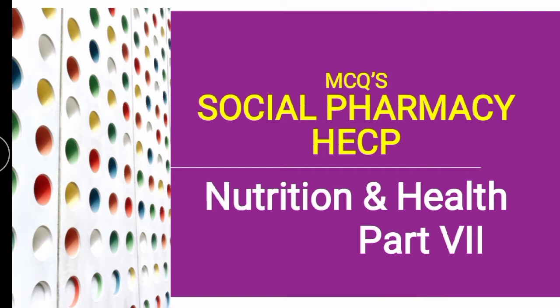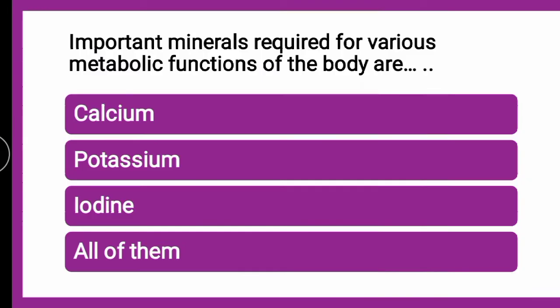To start with Part 7, the very first MCQ is: Important minerals required for various metabolic functions of the body are — dash. You all might be knowing about the minerals which are required in very trace quantities. What are those minerals required for various metabolic functions? Whether it is Calcium, whether it is Potassium, whether it is Iodine, or all of them?